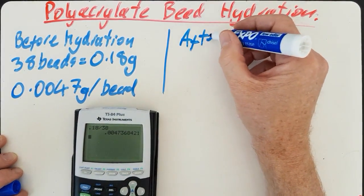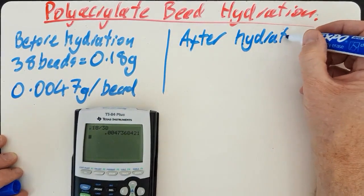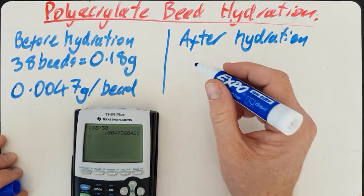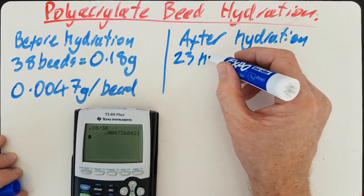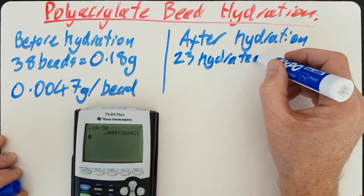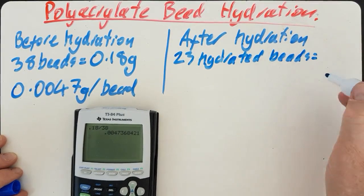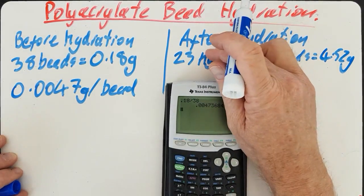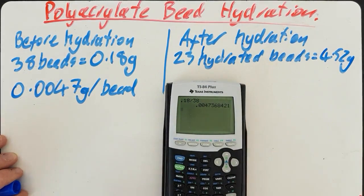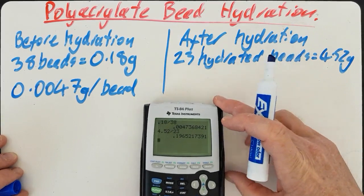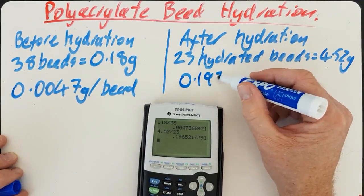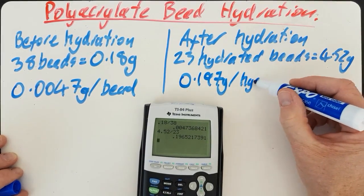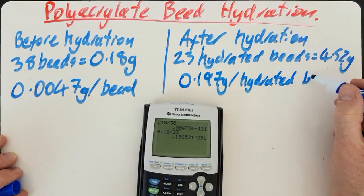After hydration, well their mass increased. 23 of those hydrated beads had a mass of 4.52 grams. That gives a mass per bead of 0.197 grams once they're hydrated.